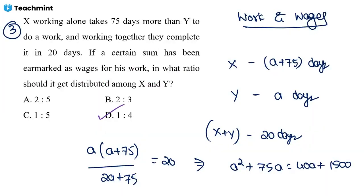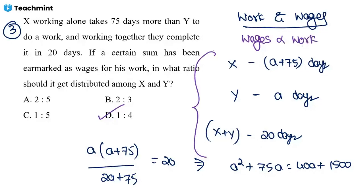To summarize: first calculate the time each person takes alone; from timing you get efficiency; efficiency determines the work done. Those who do more work get more payment, those who do less work get less payment. Payment is always proportional to work done.